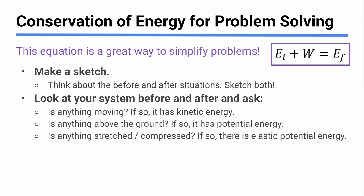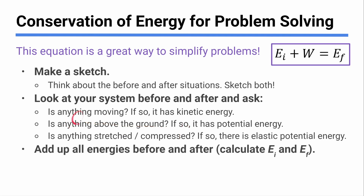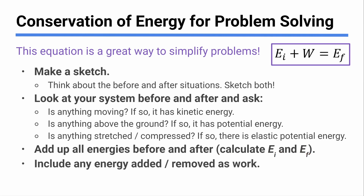A really common mistake: it's not true that because you don't have kinetic energy, you must have potential energy. You look at the physical picture and ask those questions — that's how you decide what types of energy you have. Add up all the energy at the beginning to get your initial energy, add up all the energy at the end for your final energy. If work is done, include it — positive if energy is added, negative if energy is taken away.